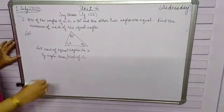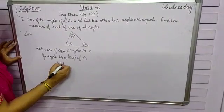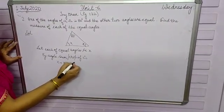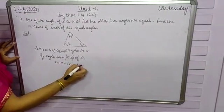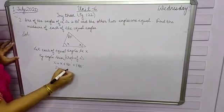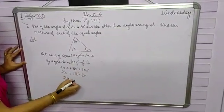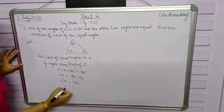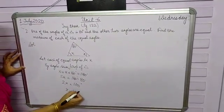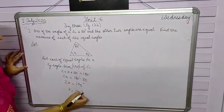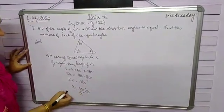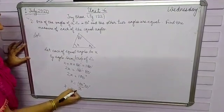So x plus x plus 80 degrees is equal to 180 degrees. So 2x plus 80, when it goes to that side it will be subtracted, so 2x is equal to 100 degrees, and x is equal to 100 degrees divided by 2. That means each of the equal angles is 50 degrees.